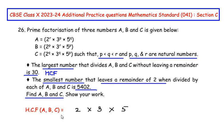Remember that HCF always takes the smallest power among the given numbers. Since p is the smallest value among p, q and r, in a, b and c, 2 to the power of p is the smallest, 3 to the power of p is the smallest, and 5 to the power of p is the smallest. So the HCF of a, b and c is 2 raised to p times 3 raised to p times 5 raised to p.